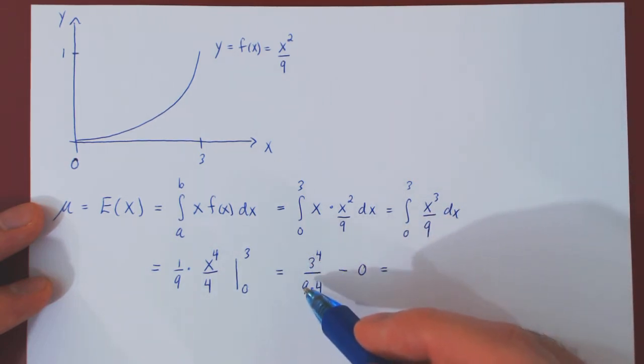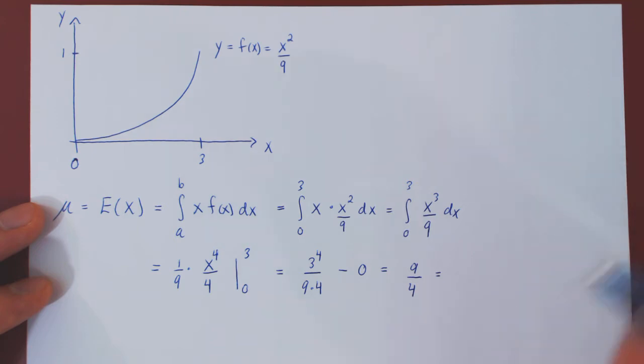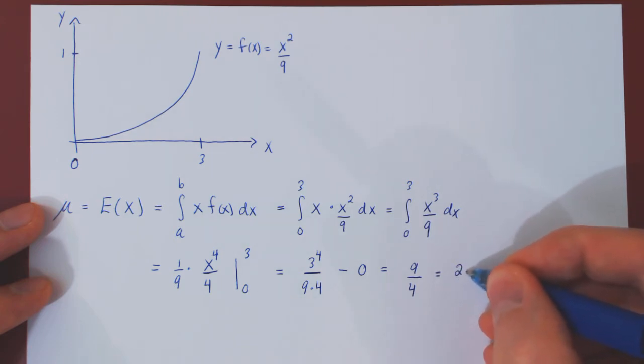We can simplify a little bit. 9 is 3 squared, so 3 to the 4 over 3 squared is 3 squared. We're left with simply 9 quarters, which in decimals is 2 and a quarter, so 2.25.